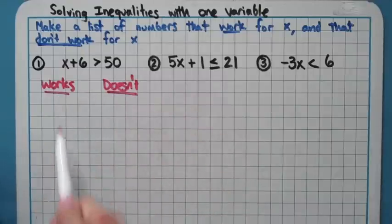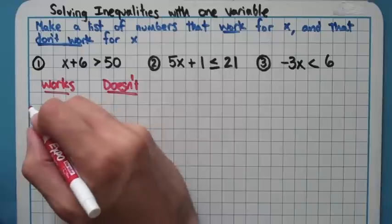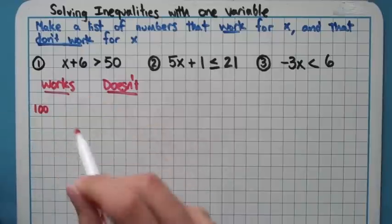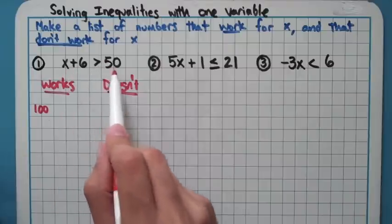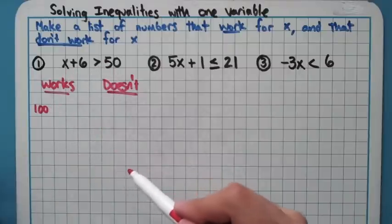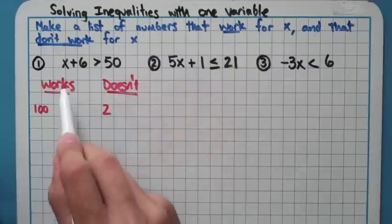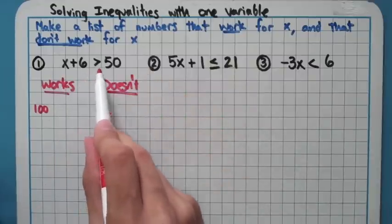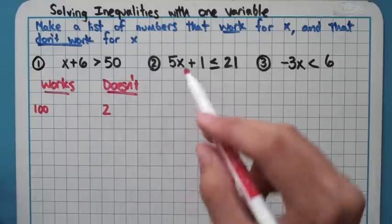For example, on this first problem here, it's x + 6 > 50. If I plug in 100 for x, 100 + 6 is going to be 106, and that's bigger than 50, so that works. A number that doesn't work would be if I chose 2. 2 + 6 is only 8, and 8 is not bigger than 50. Obviously you're not going to have the same numbers as me because there's tons of answers.